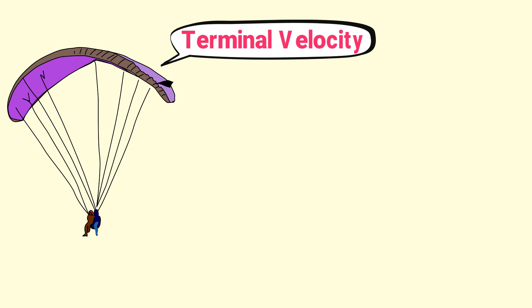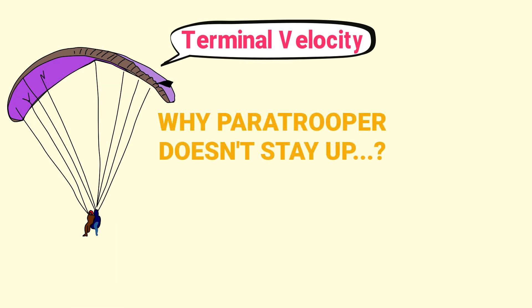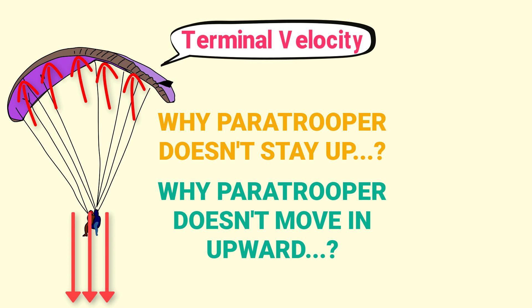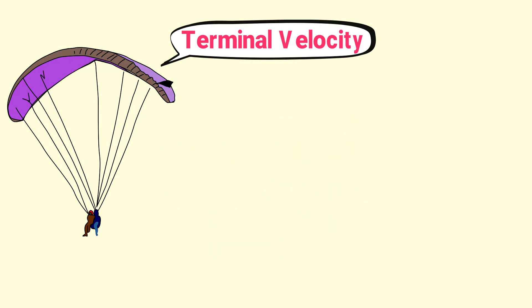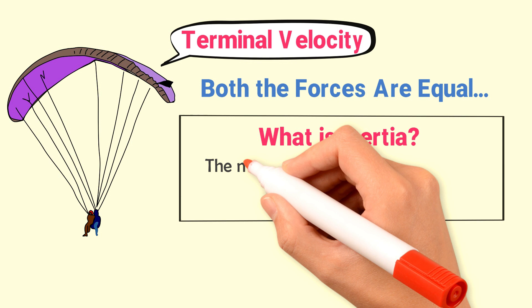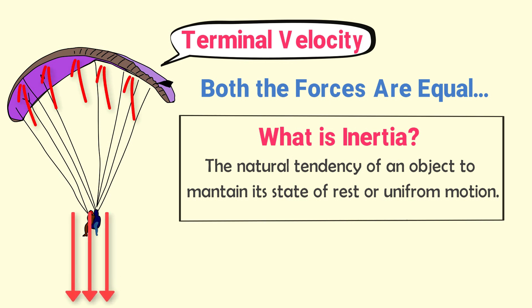Here comes the most interesting and difficult question of this lecture. When the downward force and the upward force on the paratrooper become equal, then why doesn't this paratrooper stay up in the air? Or why doesn't this paratrooper move in an upward direction, since both the downward force and the upward force are equal? The answer is inertia. Inertia is the natural tendency of an object to maintain its initial state of rest or initial state of uniform motion. Initially, the paratrooper was in motion in a downward direction. When the downward force and upward force become equal, inertia appears.